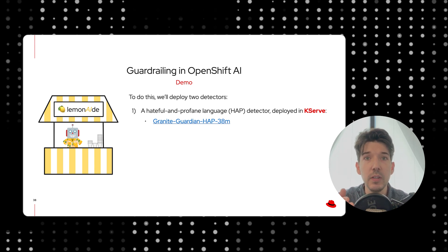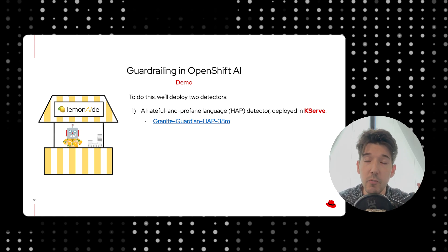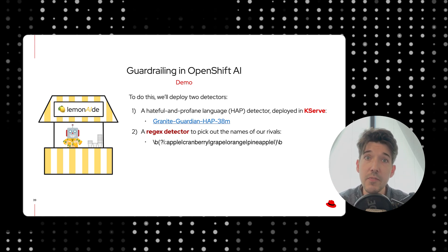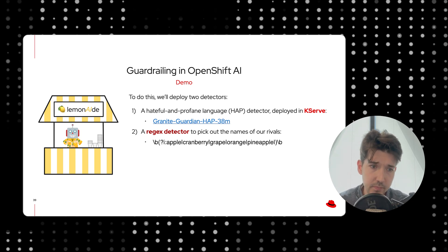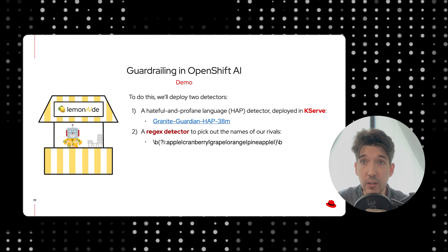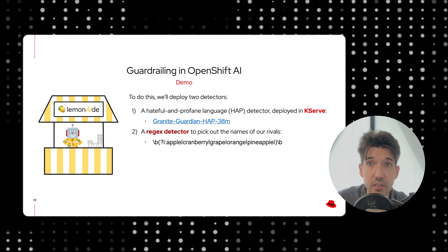We'll deploy this just like any other predictive model in OpenShift AI — we'll deploy it in KServe, which will let us query specific text through it and see if it flags for the various kinds of hateful language the model is trained on. Second, we'll set up a regex detector to identify keywords from our competitors — things like apple, orange, or pineapple. This will be set into the regex detector server, which is a little sidecar image that lives next to the orchestrator. This is really good for quick experimentation and for setting up lightweight detection algorithms, like checking whether a word exists in the user input.